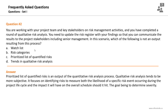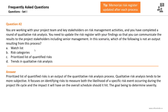Trends in qualitative risk analysis is also an output — it's a risk register update resulting from the qualitative risk analysis process. A prioritized list of quantified risks is an output of the quantitative risk analysis process. Qualitative risk analysis tends to be more subjective; it focuses on identifying risks to measure both the likelihood of a specific risk event occurring and the impact it will have. You need to understand the risk register and risk report updates that occur after each risk management process.